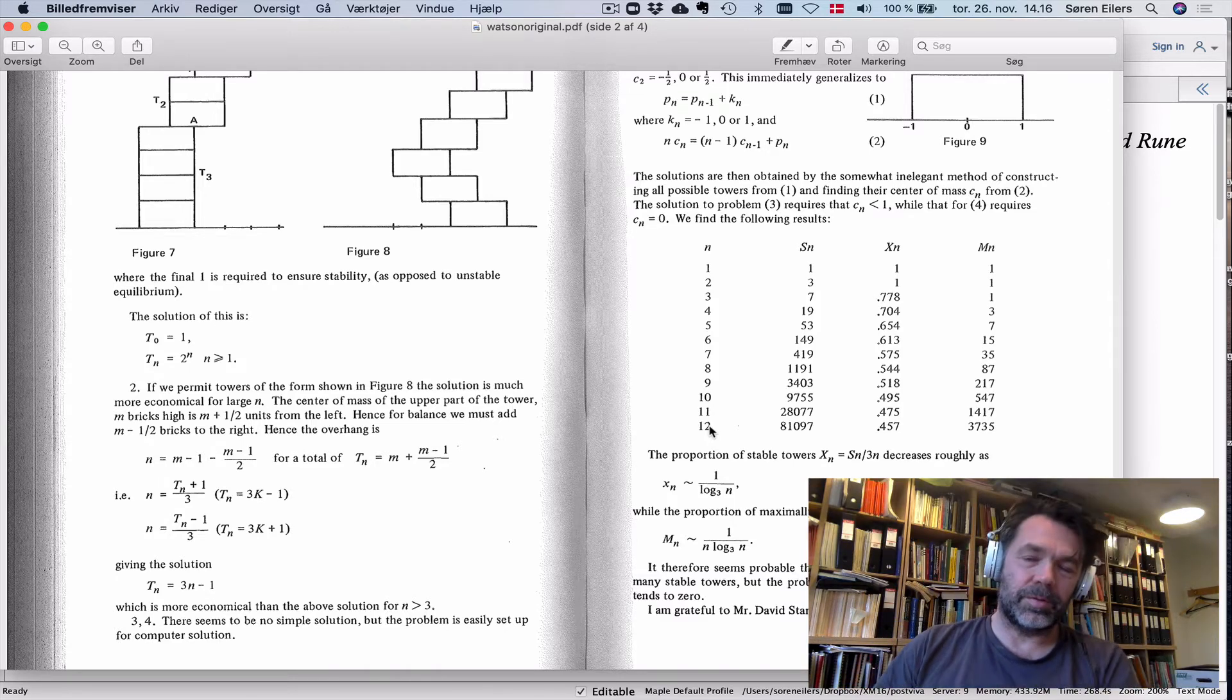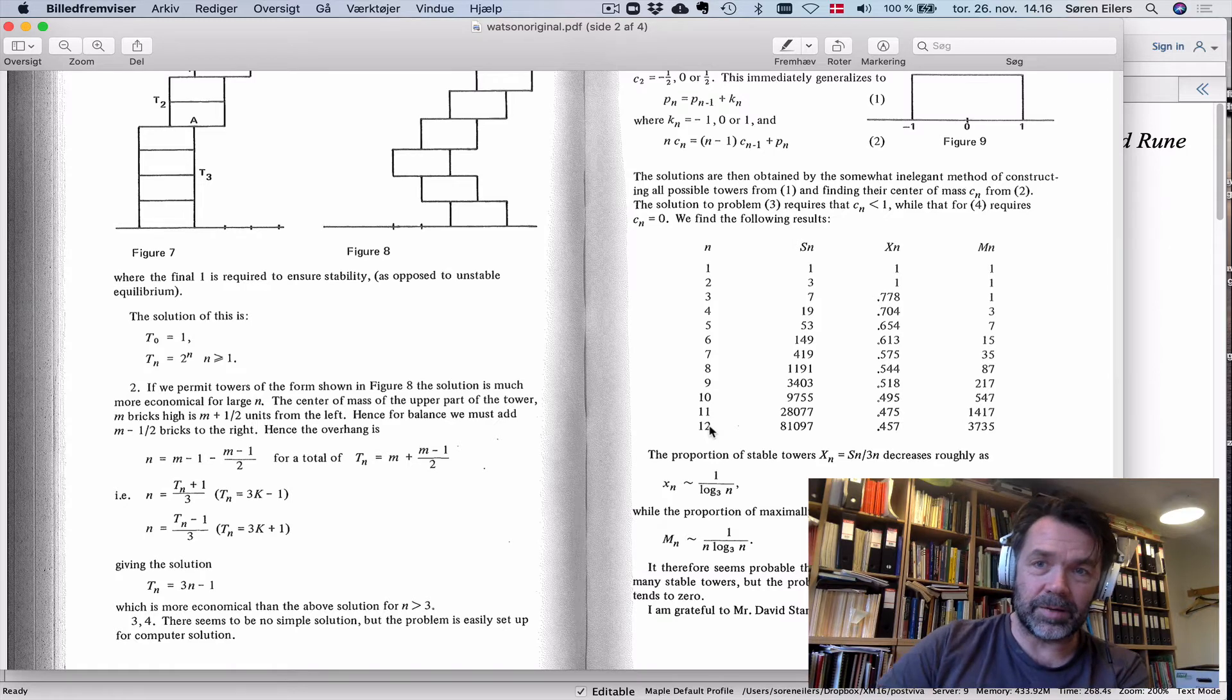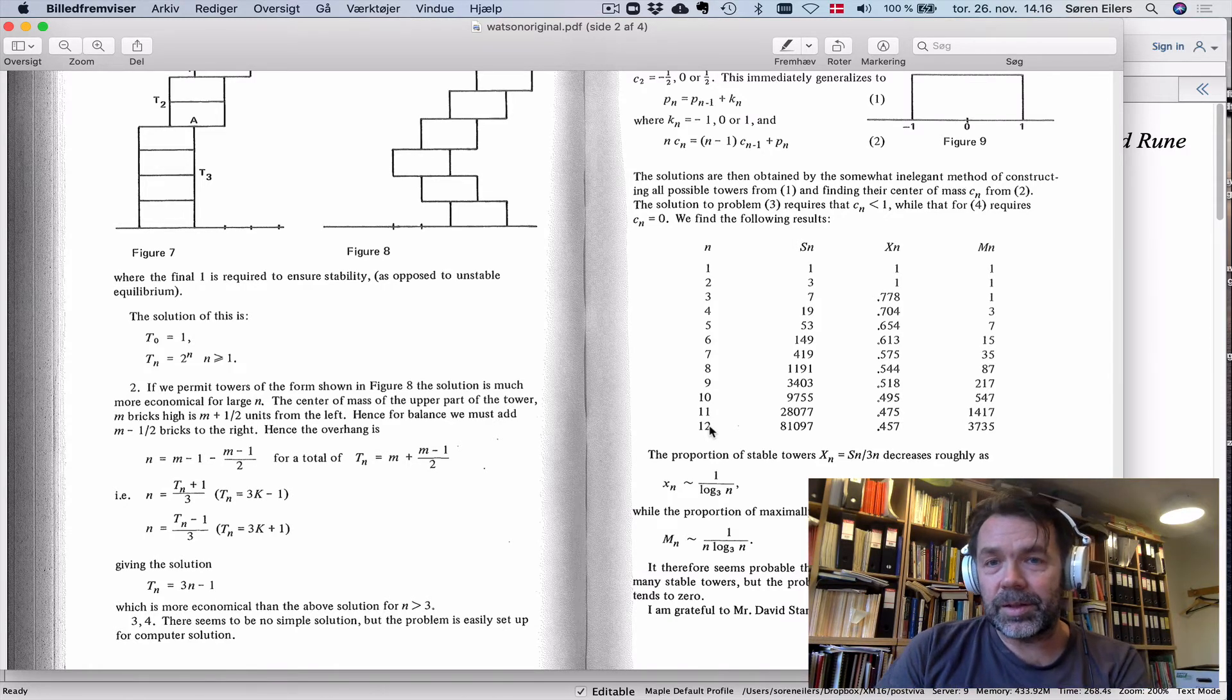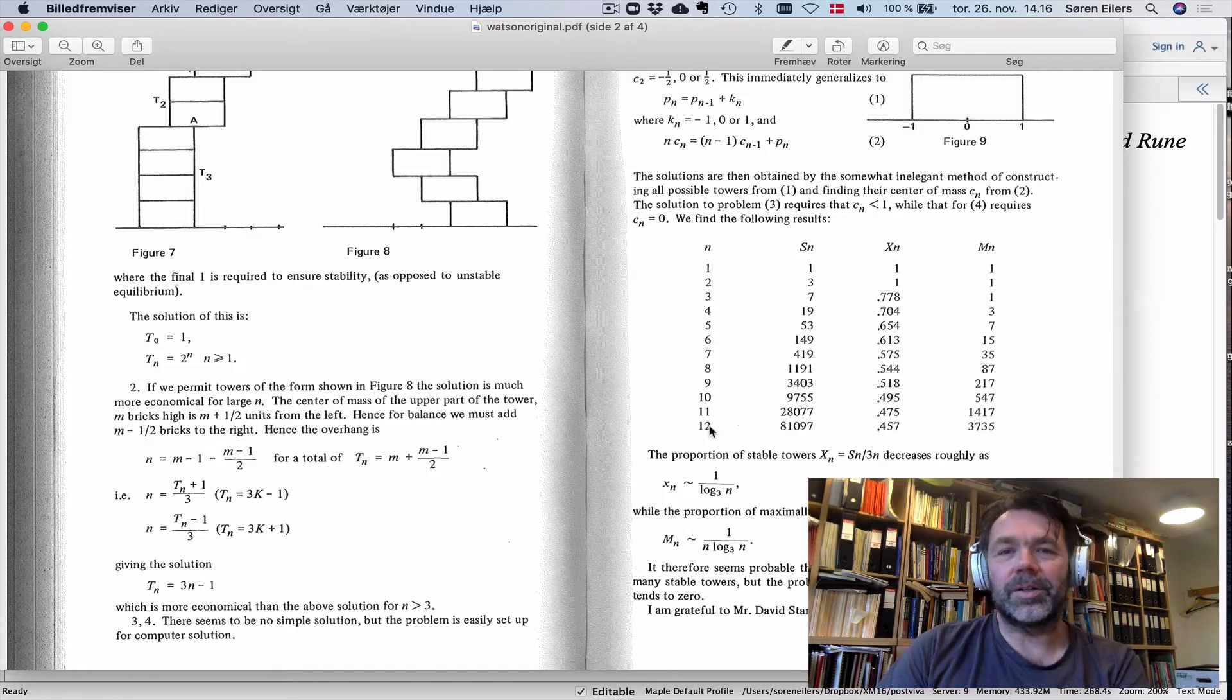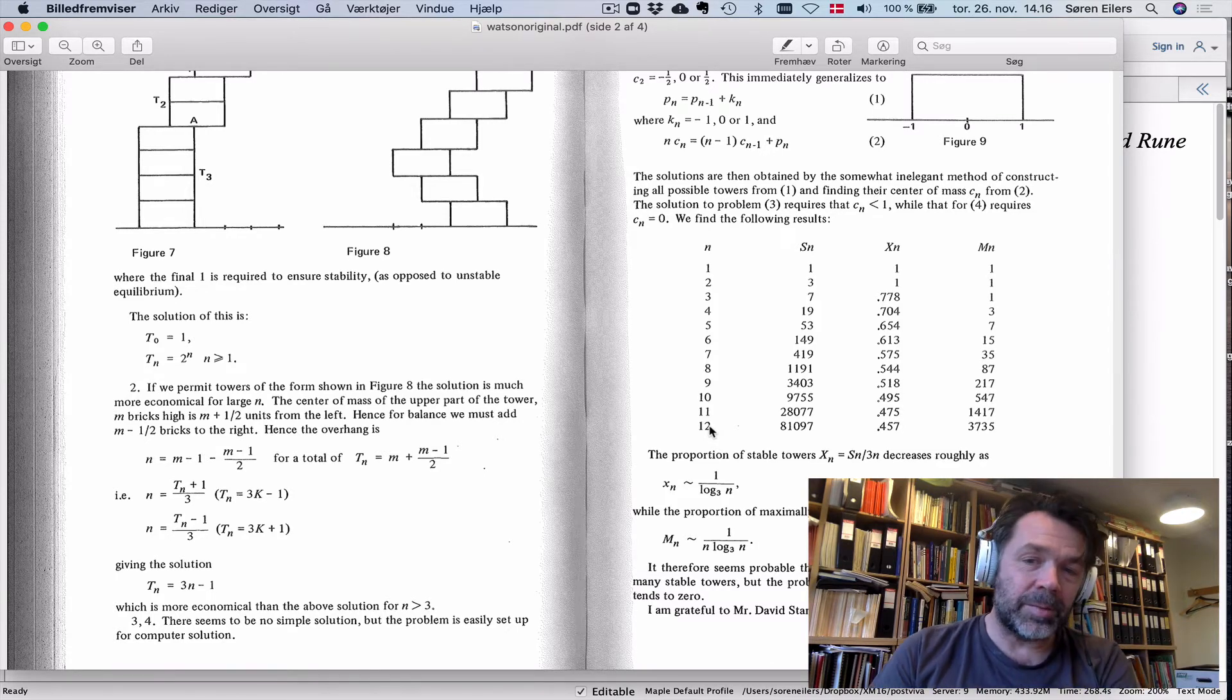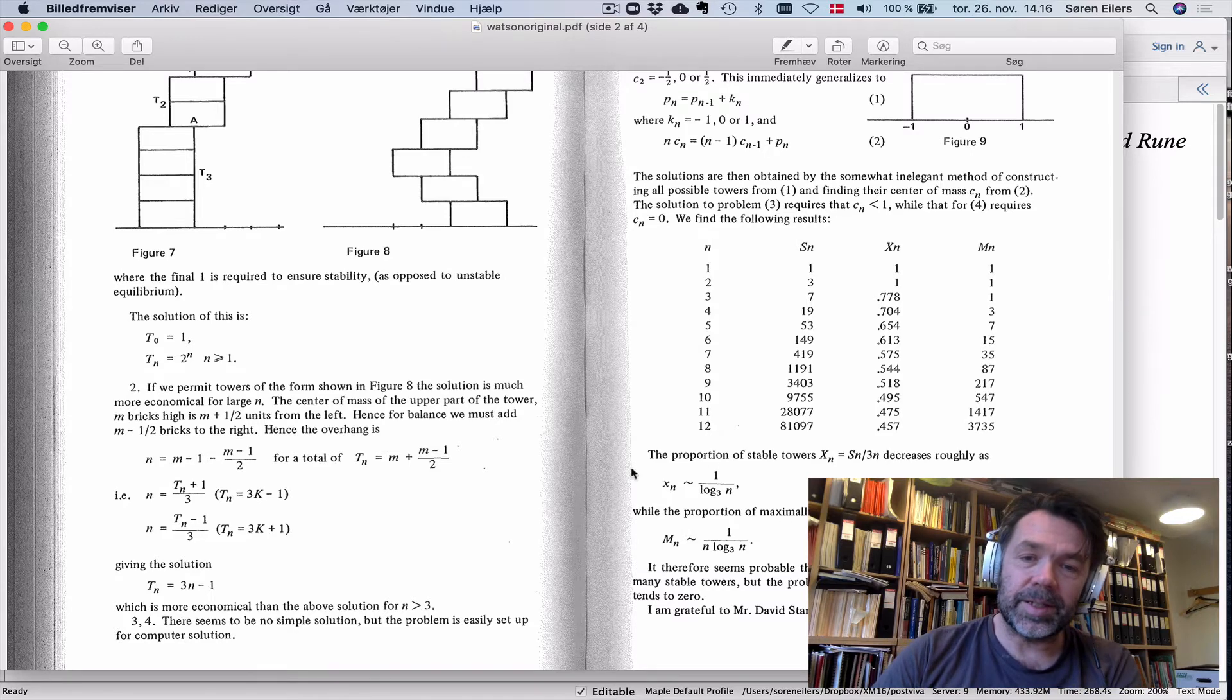His computer is a lot slower than the one I have here, being from 1979. But the point is not just the computer, it's also the algorithm he must have used. It's very easy to get many more data points. When you have many more data points, you can also fairly easily see that this is not a good conjecture.